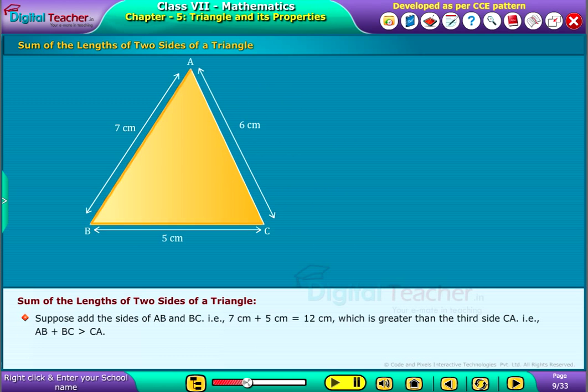Suppose we add the sides of AB and BC. That is, 7 cm plus 5 cm is equal to 12 cm, which is greater than the third side CA. That is, AB plus BC greater than CA.